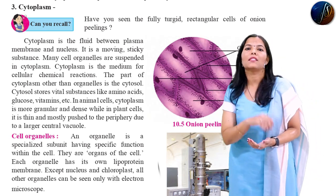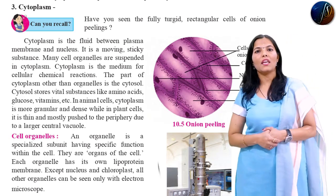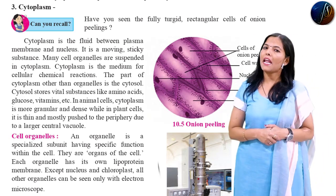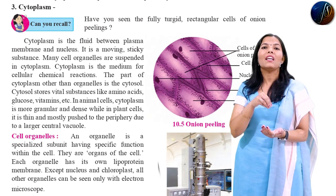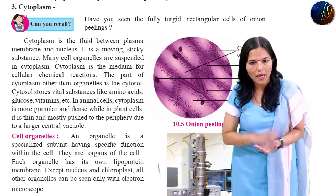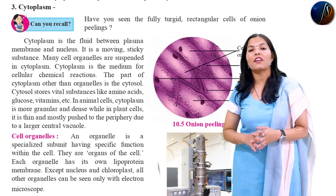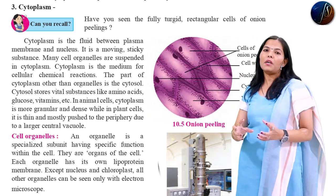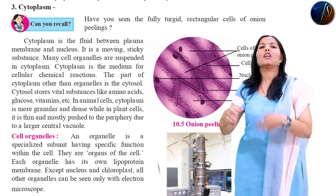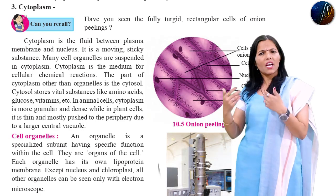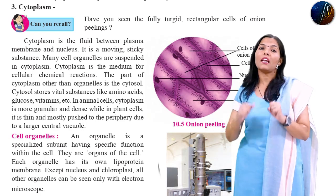All cell organelles are embedded in the cytoplasm. Cytoplasm is the medium for the different chemical reactions which occur in the cell. In the cell, there are chemical reactions such as digestion and excretion. There are many reactions, and these reactions are carried out in the medium of cytoplasm.